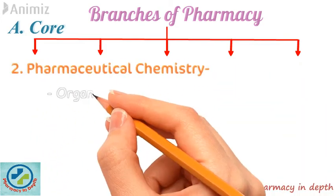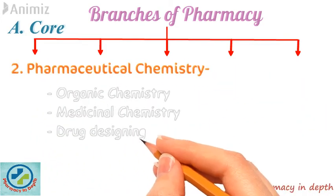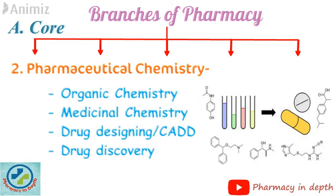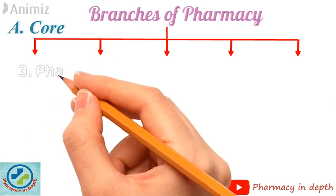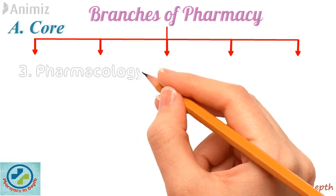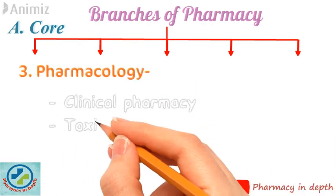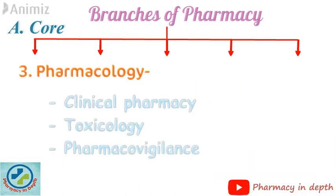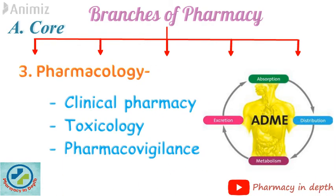The second branch is Pharmaceutical Chemistry. It has subjects like Organic Chemistry, Medicinal Chemistry, Computer Aided Drug Designing and Drug Business. The third branch is Pharmacology, which has subjects like Clinical Pharmacy, Toxicology and Pharmacovigilance.